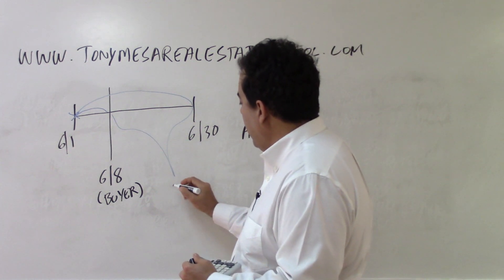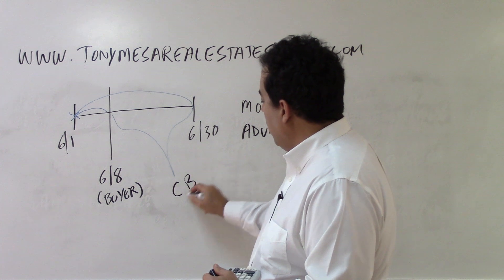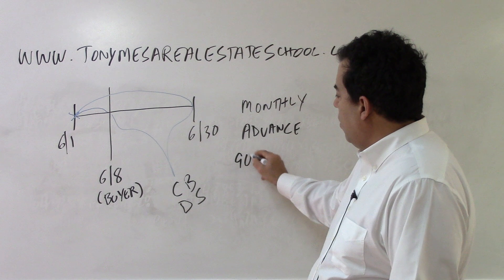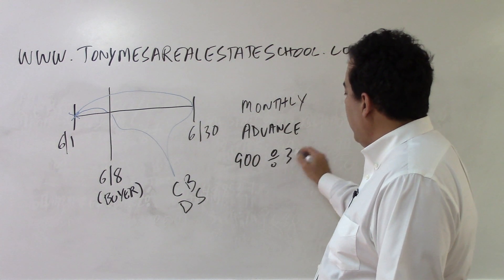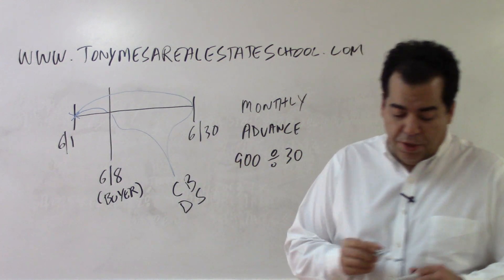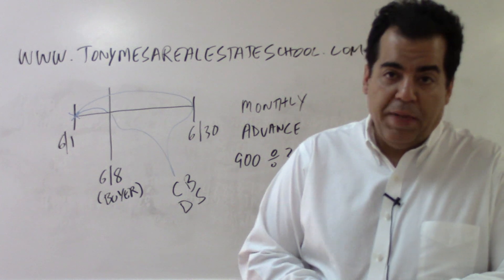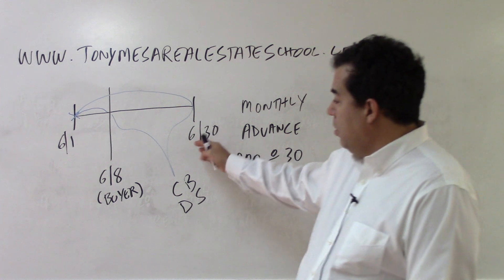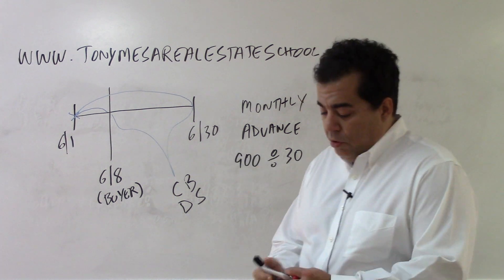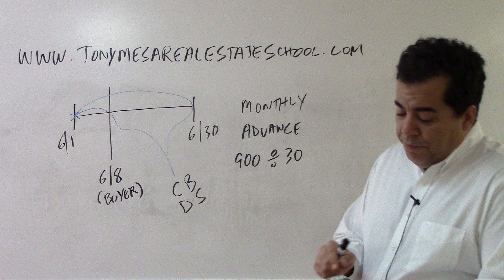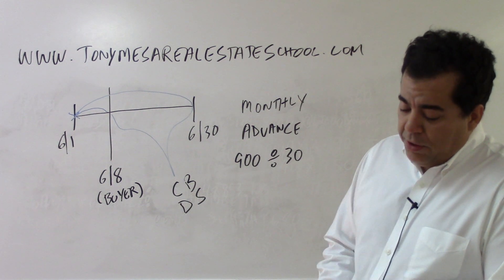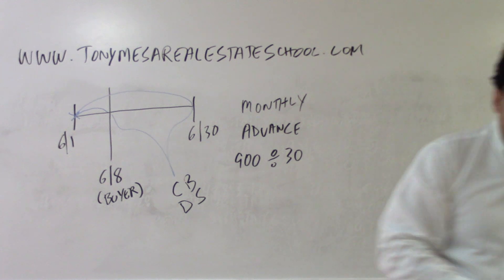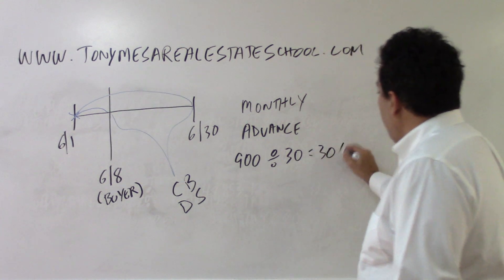And what's going to happen is for this portion over here, we are going to credit the buyer and we are going to debit the seller. So first let's look at the calculation. We've got $900 per month divided by 30 days in this 30 day month. Now look, if the closing was in May, May has 31 days. The closing is in February, February has 28 days. But this closing is in the month of June. June is a 30 day month. So $900 divided by 30 days gives us $30 per day.